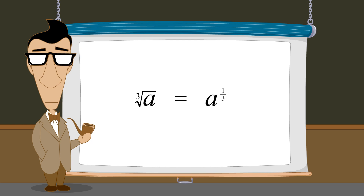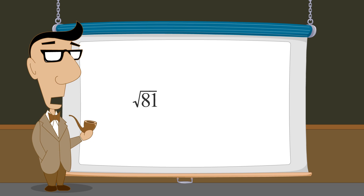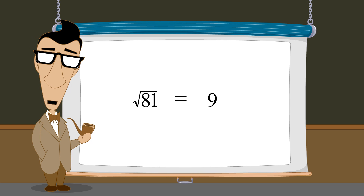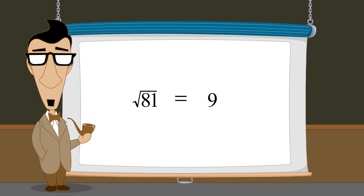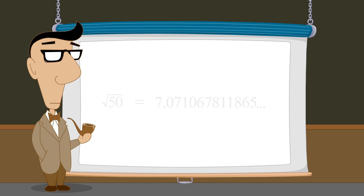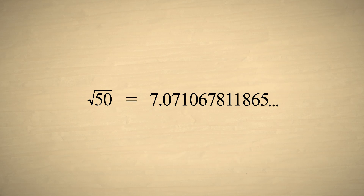We have seen that roots can sometimes be integers. For instance, the square root of 81 is 9. It is obviously simpler to write the integer 9 than to write the square root of 81. However, most roots are irrational numbers. In this case, writing the root as a radical expression is probably simpler than writing a long sequence of digits.